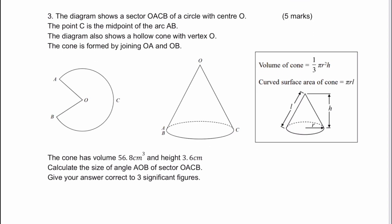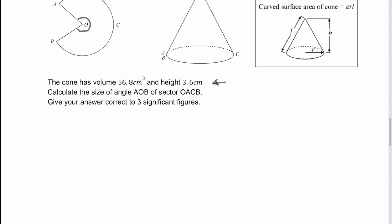So question number three, we've got quite a little bit of writing here that we need to work through. Basically what it's asking is to calculate the angle AOB, which is actually this angle on the screen here. Now in order to do that we're told that the cone has a volume of this and a height of this, so I'm going to use that information to find out a little bit more about the cone itself.